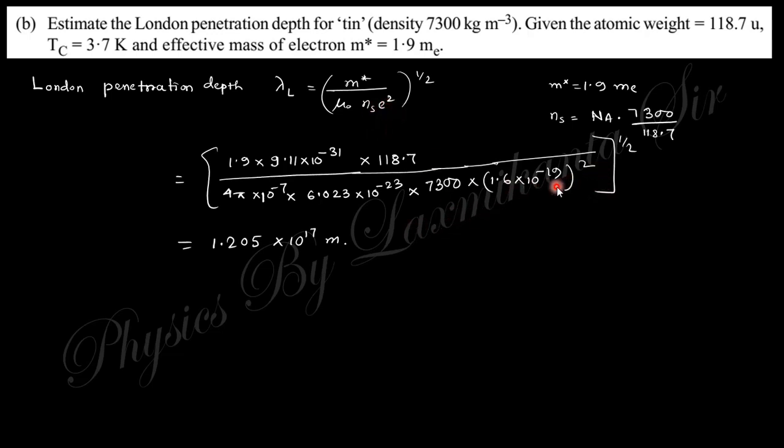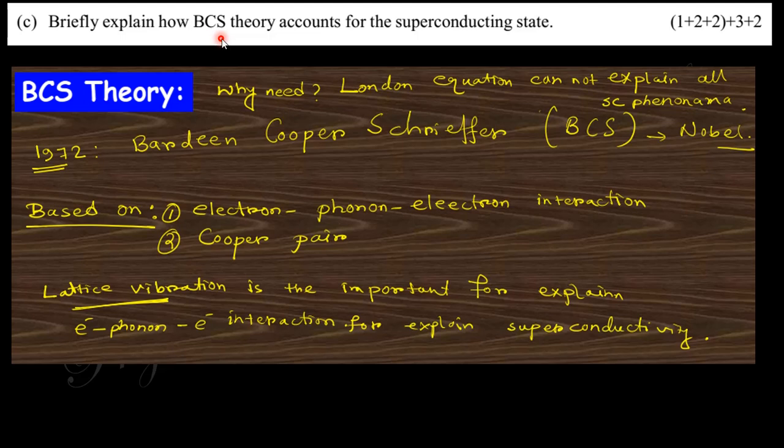Next question: Briefly explain the BCS theory. BCS means Bardeen, Cooper, and Schrieffer for superconducting state. This is actually based on electron-electron interaction and Cooper pair.